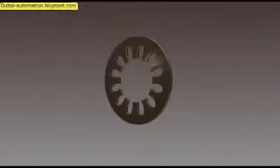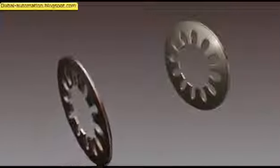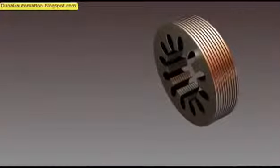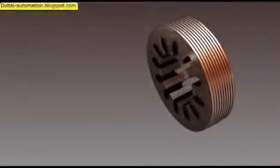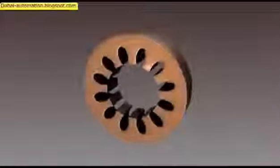The stator is the stationary electrical component. It is built by putting together iron layers, forming a group of individual electromagnets arranged in such a way that they form a hollow cylinder, with one pole of each magnet facing toward the center of the group.